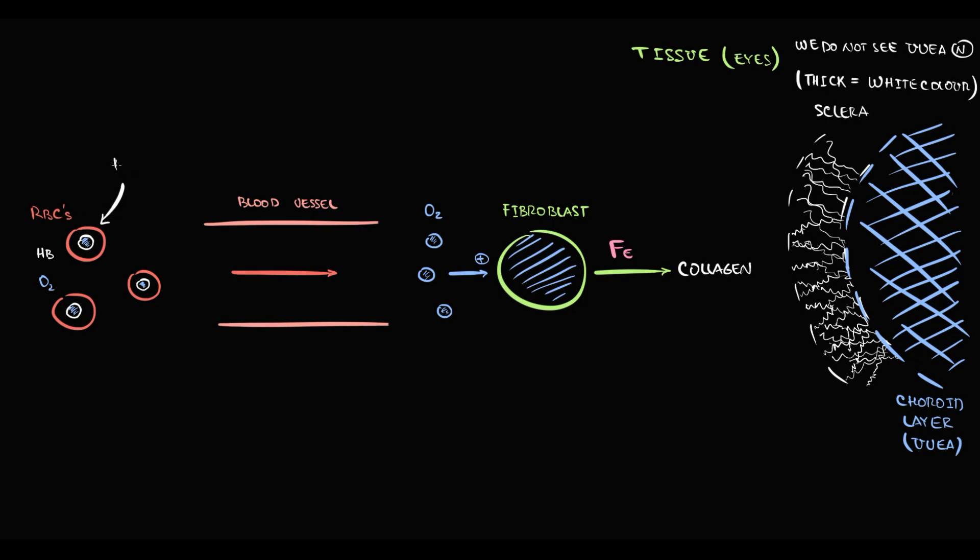Also recall that hemoglobin is composed of heme and globin. And heme is iron in complex with protoporphyrin.